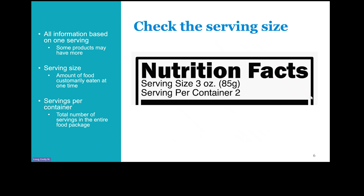Step one is to check the serving size and identify what is in the food. All the information on the label is based on one serving, but packages may have more than one serving in the whole package. You want to look at the number of servings in the package and then compare your portion size — the amount that you're actually eating — to the serving size listed on the label.